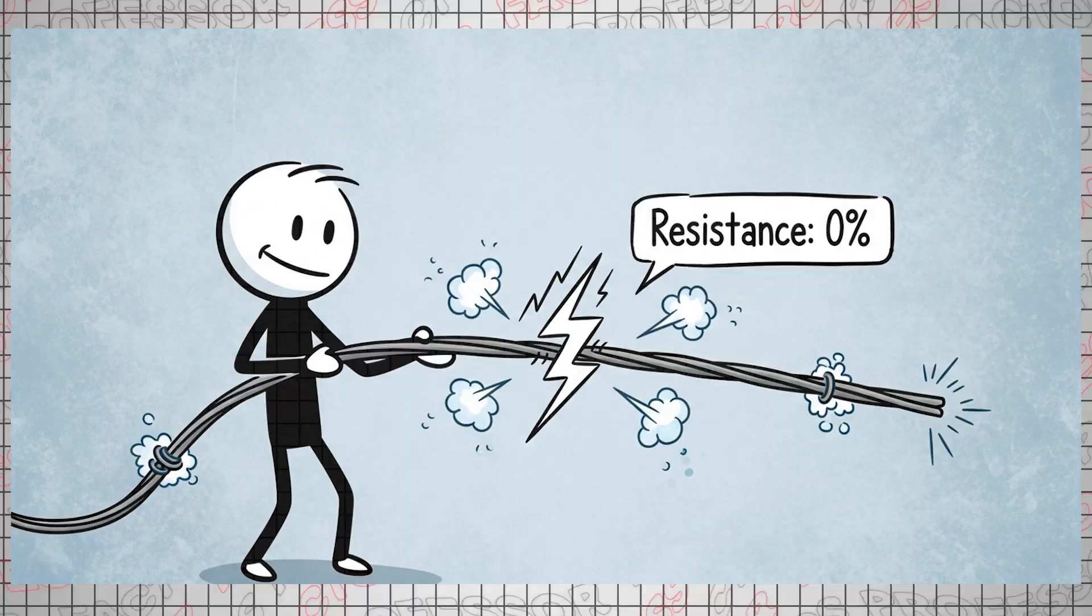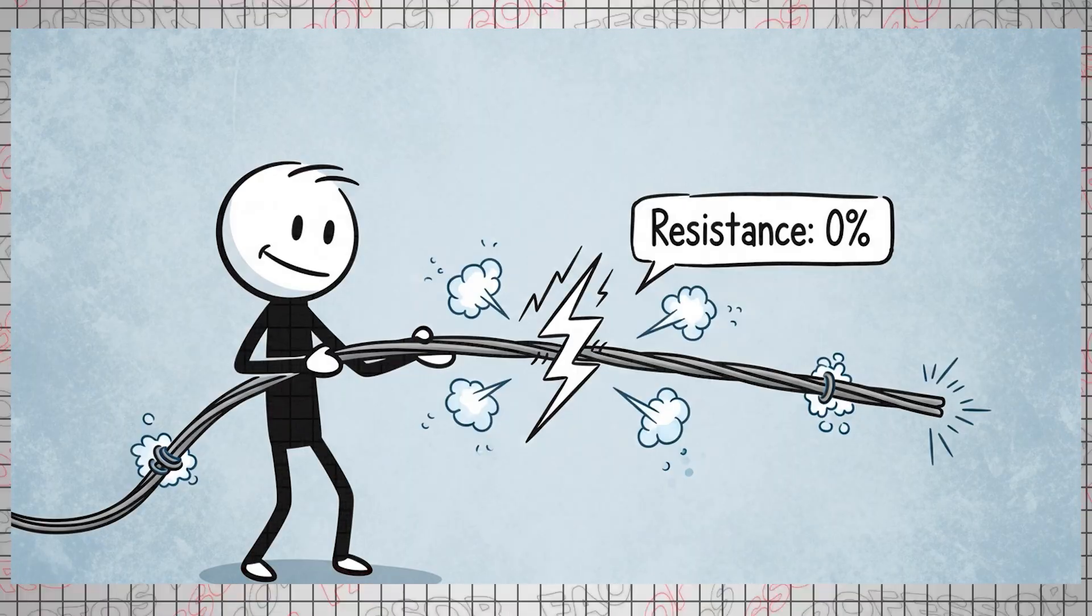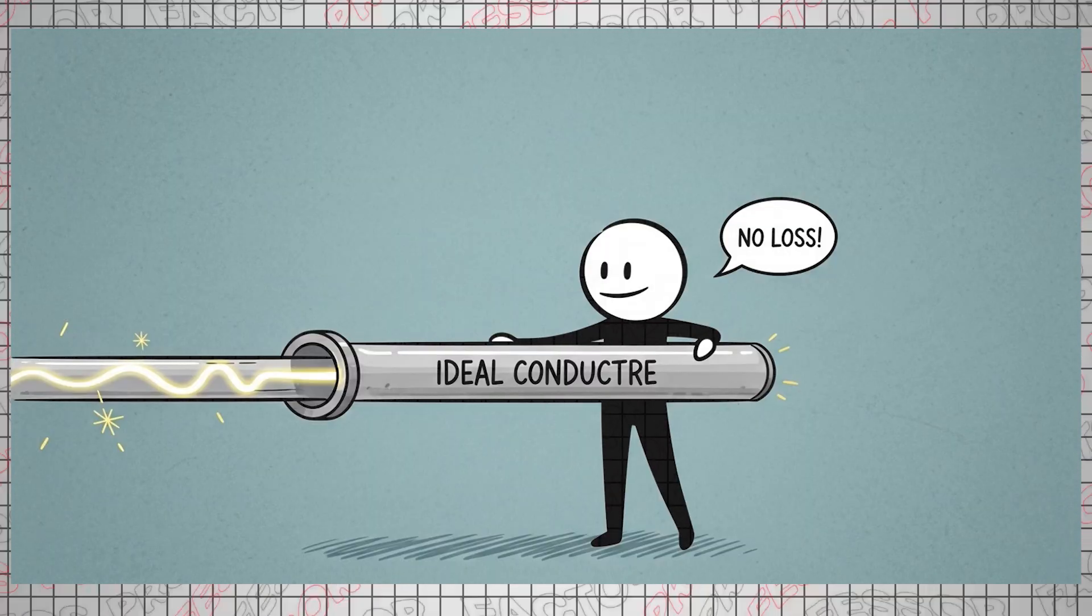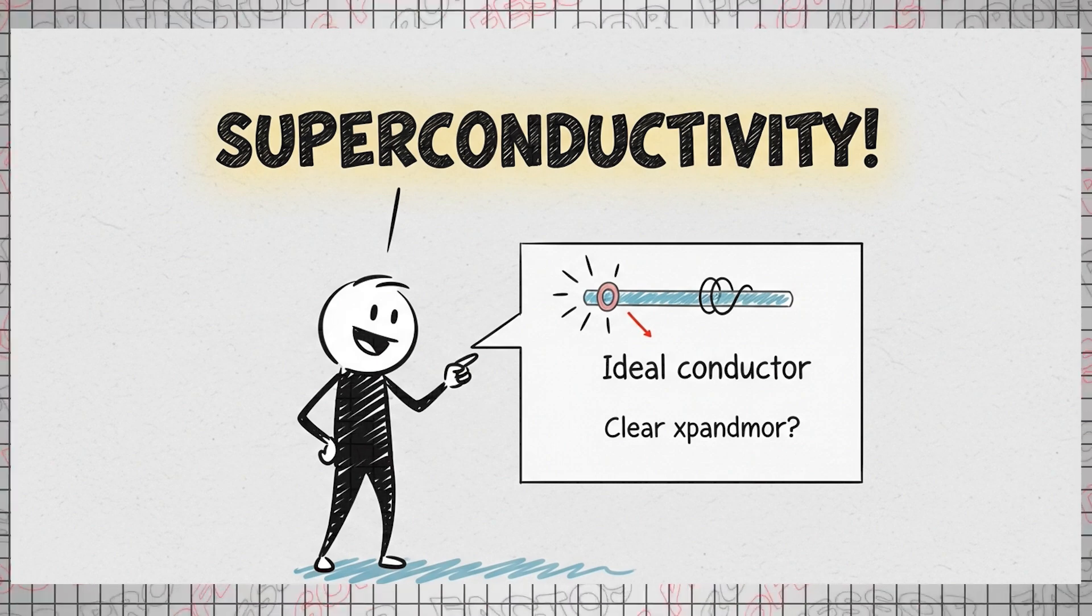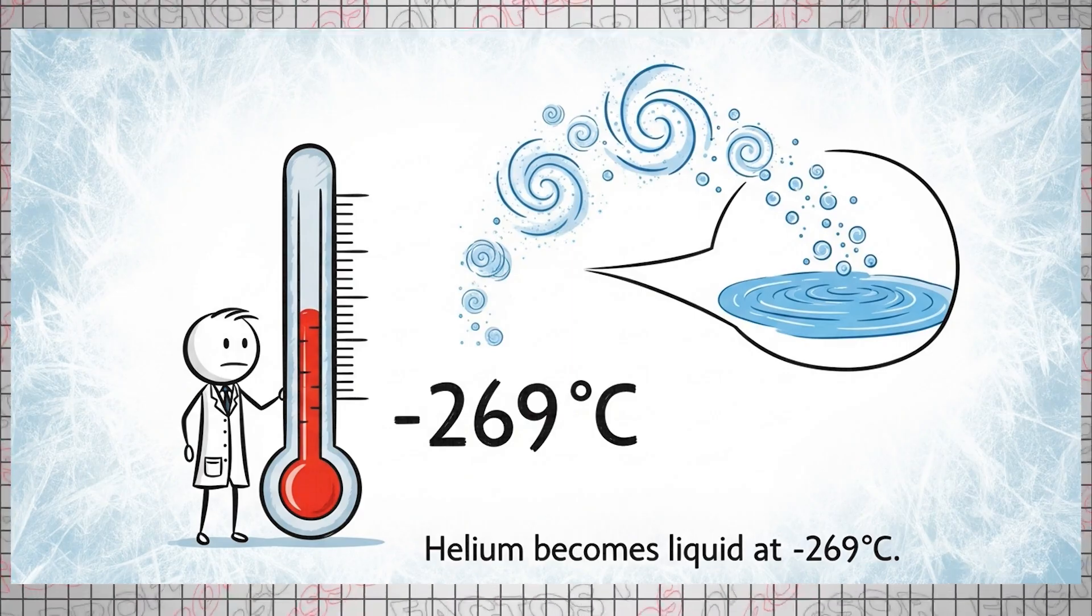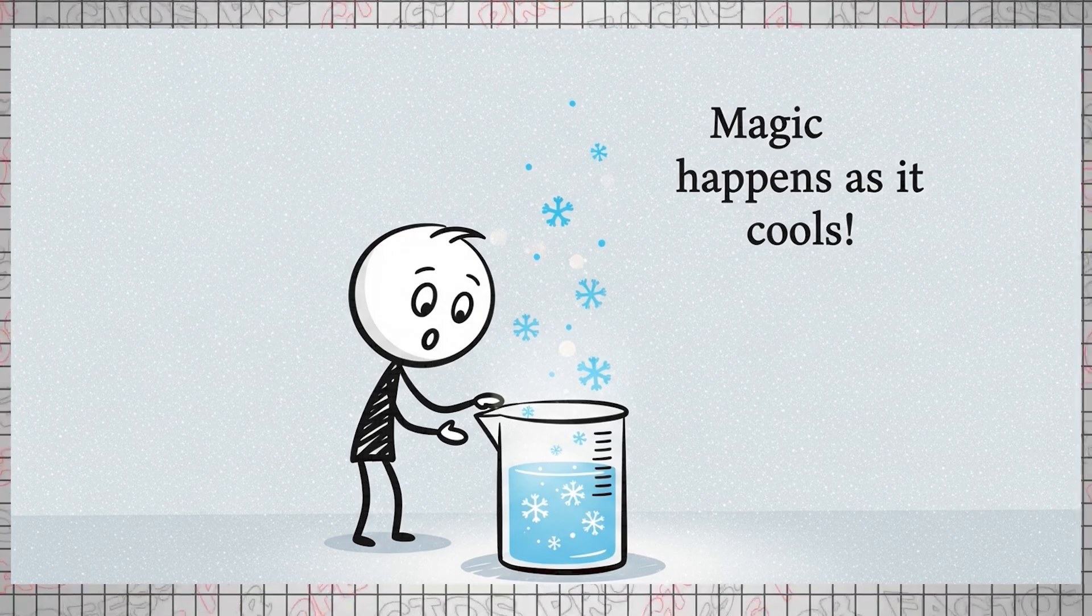In the process of deep cooling, scientists have uncovered incredible, counterintuitive properties that defy ordinary laws of physics. Specifically, very close to absolute zero, some metals almost completely lose their electrical resistance. They become the legendary ideal conductors, allowing electricity to flow through with virtually no loss. This phenomenon is called superconductivity.